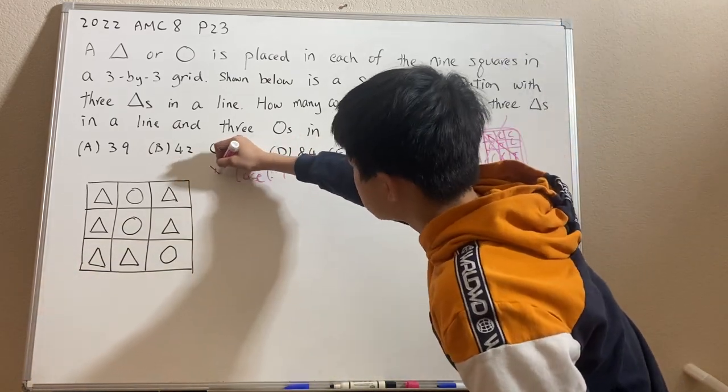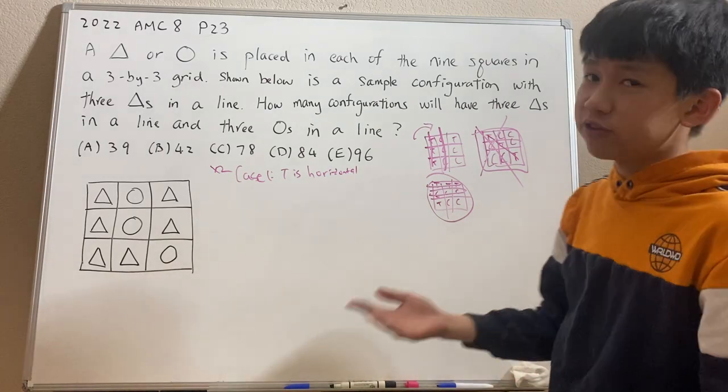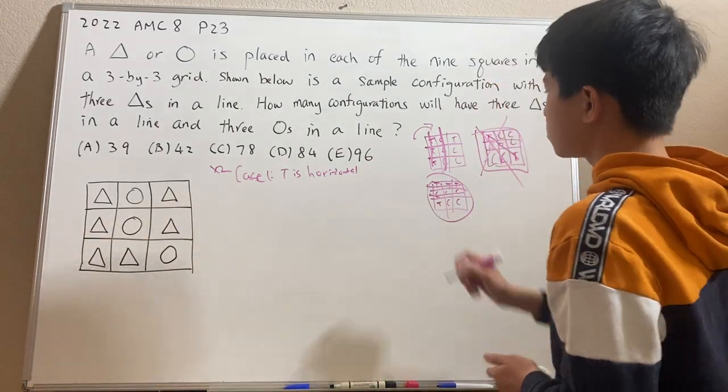So just remember to make a note to multiply by two. Okay, so now we just have our number of cases we have to do. So now T has to be horizontal.